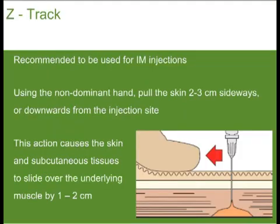The Z-Track technique is recommended when delivering intramuscular injections, as it enables the medication to be sealed in place by the subcutaneous tissue. To do the technique, using the non-dominant hand, pull the skin 2 to 3 centimetres sideways or downwards from the injection site. By doing this, the skin and subcutaneous tissues slide over the underlying muscle by 1 to 2 centimetres.